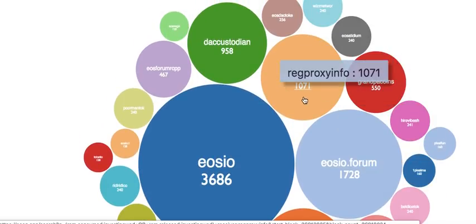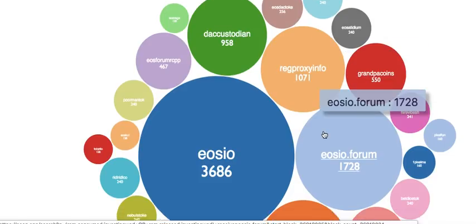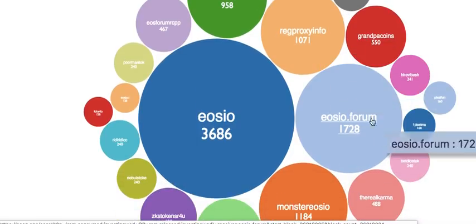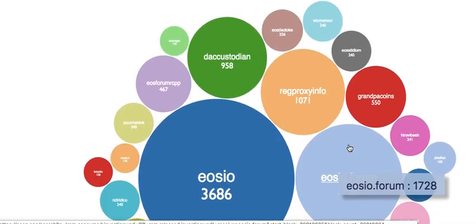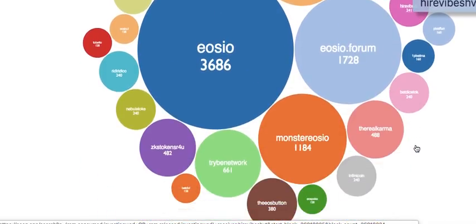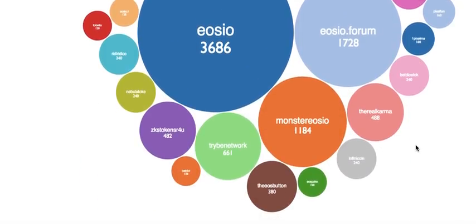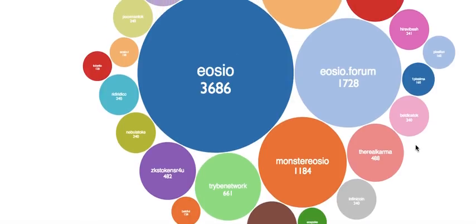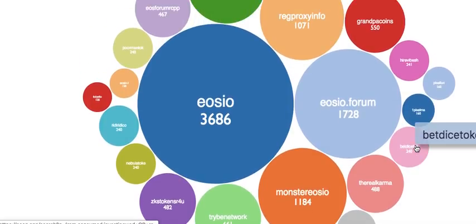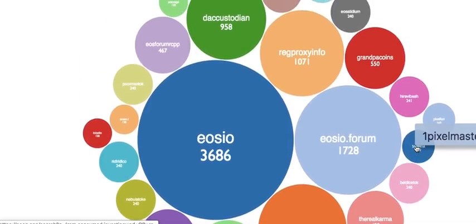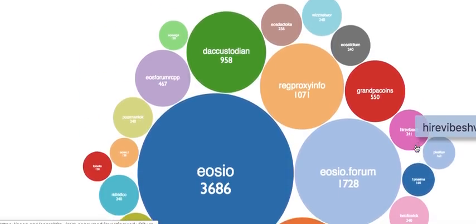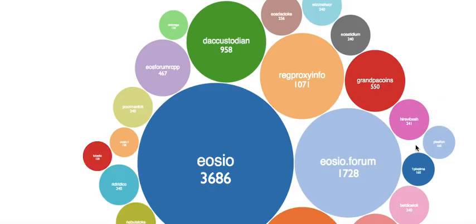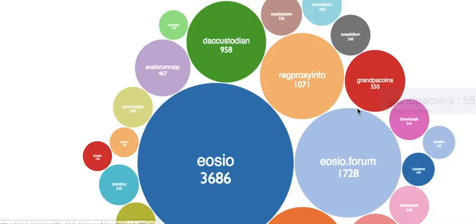Similarly, I can see some RAM I cannot avoid because I am registered as a proxy — I've added a lot of information. Then there are forums and referendums: I have created referendums and voted on them, which takes a lot of RAM. Then there are tokens. This is one way you can learn about where your RAM is going.